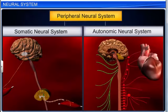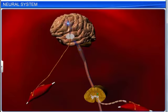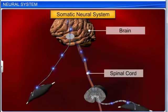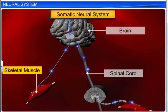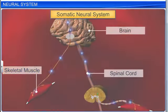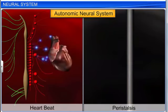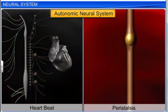The peripheral neural system can be further divided into the somatic neural system and the autonomic neural system. The function of the somatic neural system is to relay impulses from the central neural system to the skeletal muscles. The autonomic neural system controls involuntary functions such as heartbeat, peristalsis, etc.